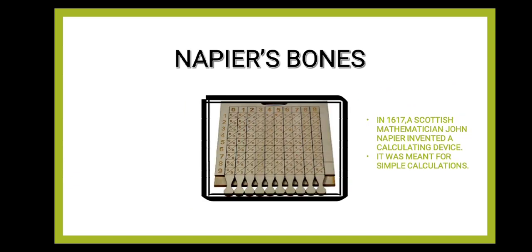Another device is Napier's Bones, as you can see in this image. In 1670, a Scottish mathematician, John Napier, invented a calculating device called Napier's Bones. This device is a set of rectangular rods marked with numbers on them. It was meant for simple calculations like addition, subtraction, multiplication and division of numbers.